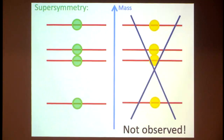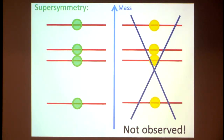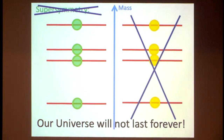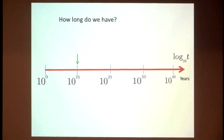According to what we know in string theory today, our universe will not last forever. We have no example in string theory where, without supersymmetry, the system is stable forever — it always undergoes some decay. We will not last forever. The theory predicts we are going to disappear. Sorry, this is a bad prediction, but what can I say? So we will not last forever.